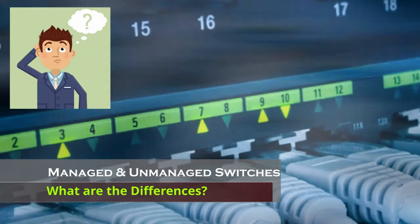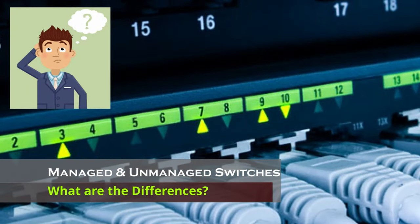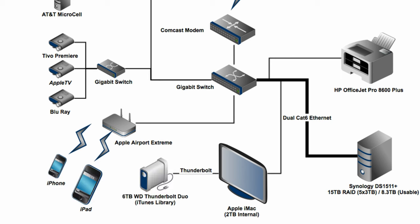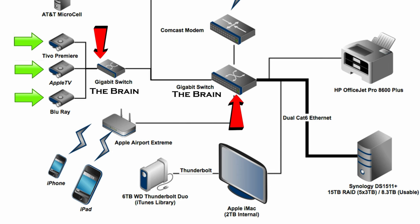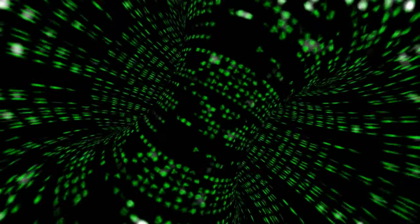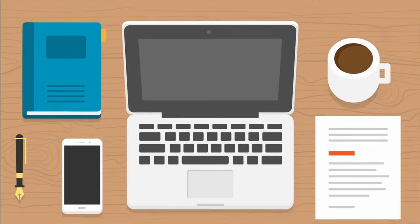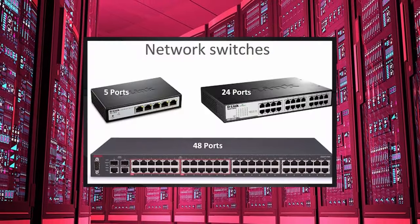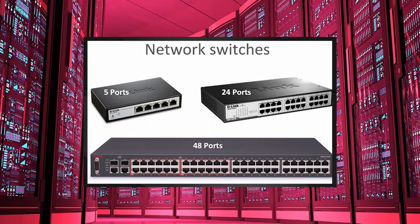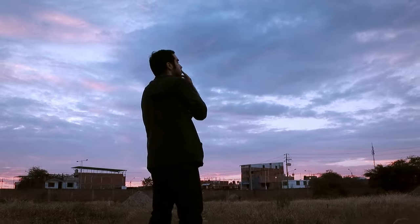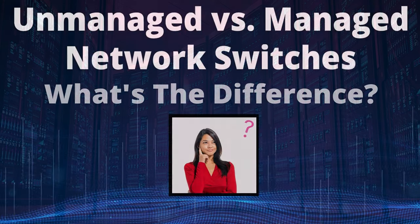Let's get started. So first, what are the differences between a managed switch and an unmanaged switch? When designing your home network, a network switch is effectively the brain of your network. These switches connect all devices together on a LAN — local area network — and are constantly redirecting and forwarding data to the correct destination. Network switches come in various sizes and can have up to 48 ports.